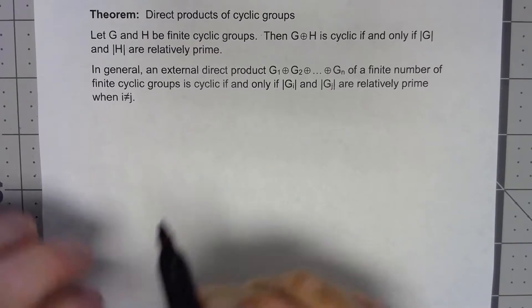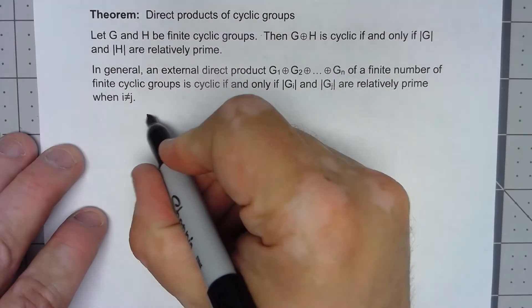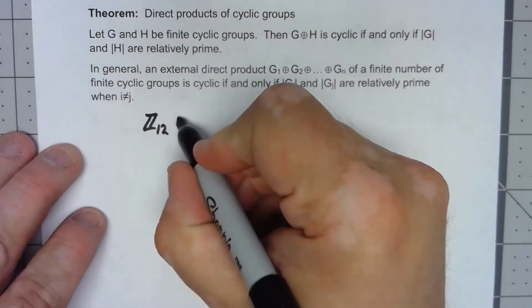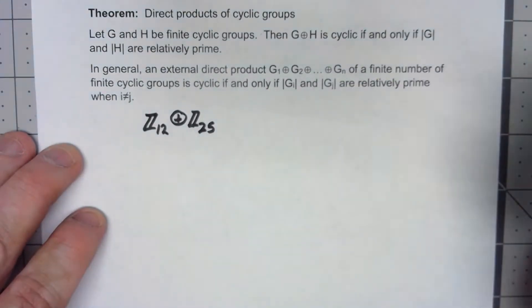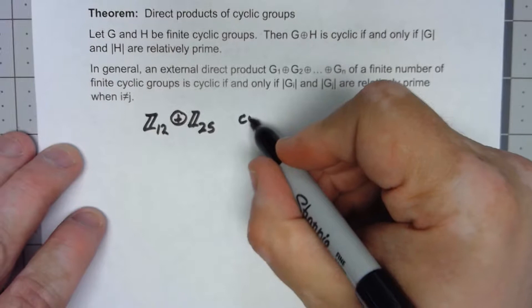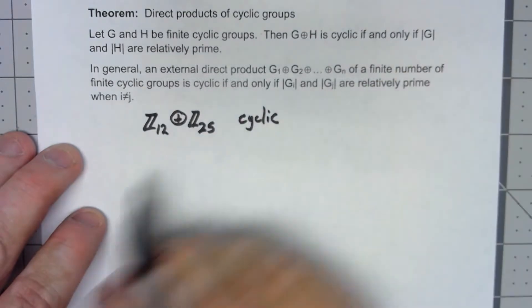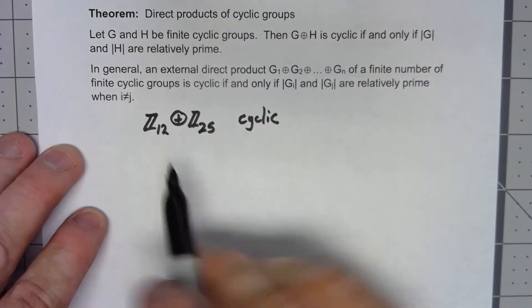For example, if I have something like Z12 plus Z25, that will be cyclic because 12 and 25 are relatively prime.